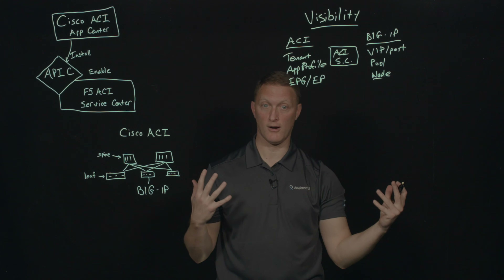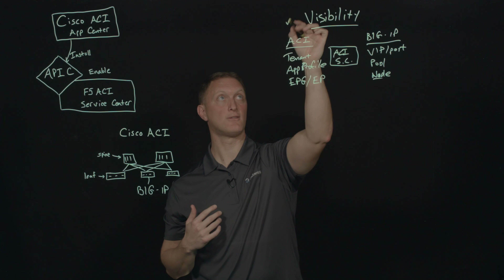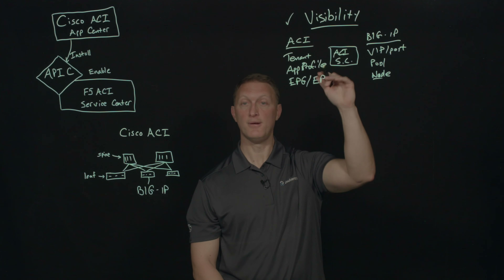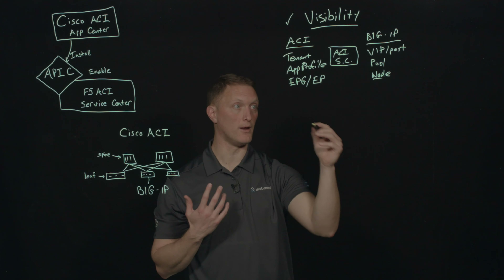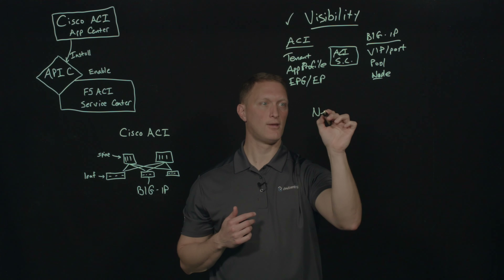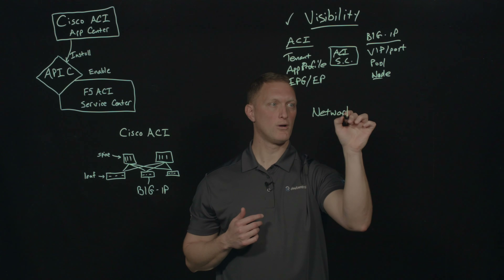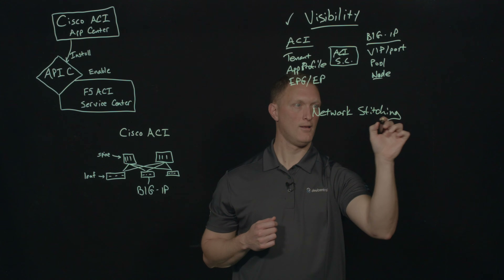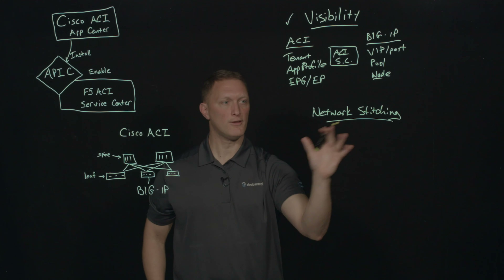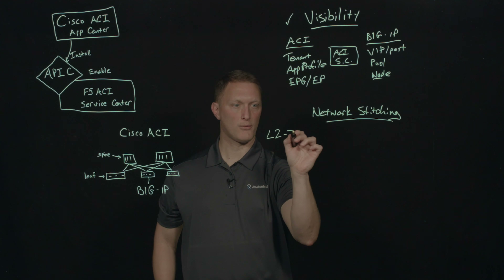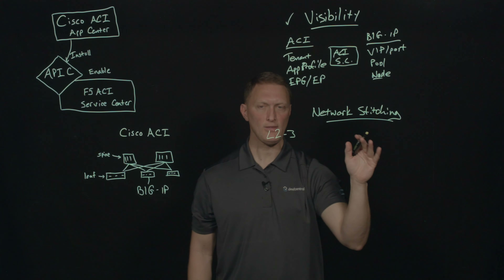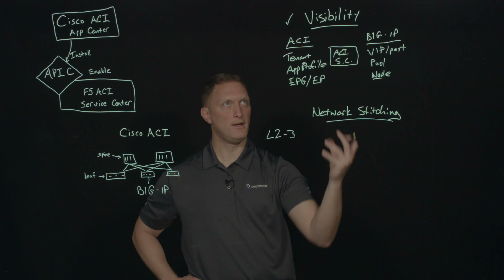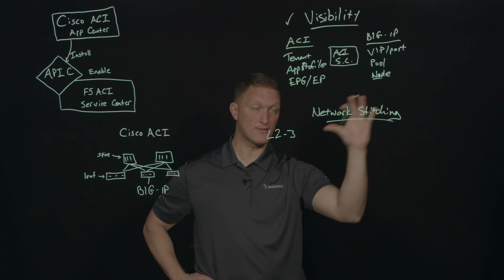That's super powerful stuff that wasn't there previously, so visibility is a really key factor in what this app can do for you. Another capability it provides is network stitching — a layer two/layer three capability. The common network object between ACI and Big IP is a VLAN.